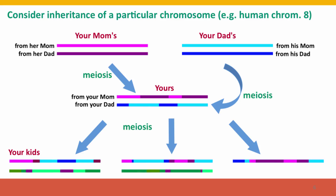In the same way, the chromosomes your children inherit from your partner will also be new combinations of segments of the homologous chromosomes that your partner inherited from their grandparents. Even just following from your parents to your children, there's an enormous amount of new genetic diversity created. New combinations of the genetic variation present in your grandparents appear in many new combinations in your children.